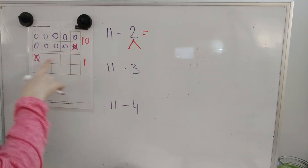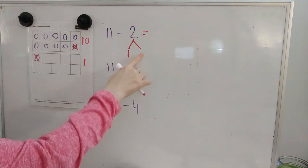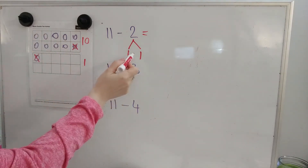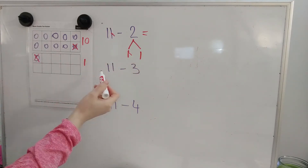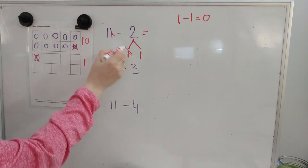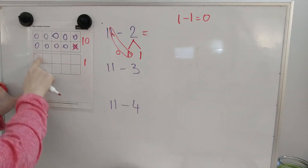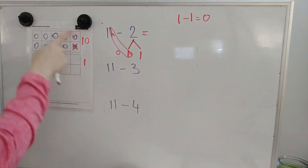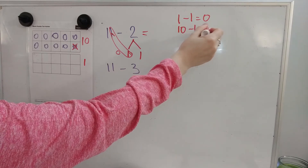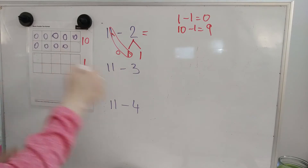I took away a 1 from the 1's place. I took away another 1 from inside the 10. So 1 minus 1 is 0. 1 minus 1 is 0, right here. There's nothing left. And then 10 minus 1. Here it is. 10 minus 1 equals 9. There's my 9. 10 minus 1. My answer is 9.